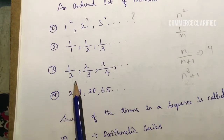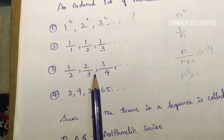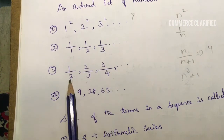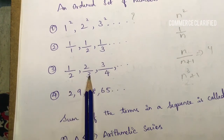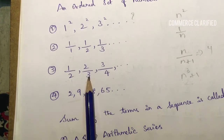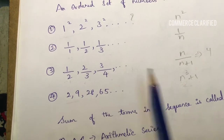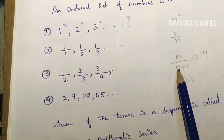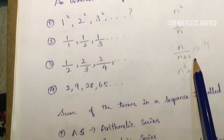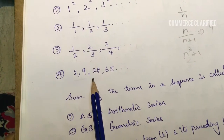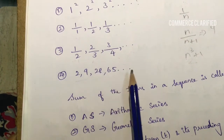Third example: 1 by 2, 2 by 3, 3 by 4, then n by n plus 1. The sequence 2, 9, 28, 65 — to find the next term, observe the pattern: 1 cubed plus 1 equals 2, 2 cubed plus 1 equals 9, 3 cubed plus 1 equals 28, 4 cubed plus 1 equals 65. So the order is n cubed plus 1.